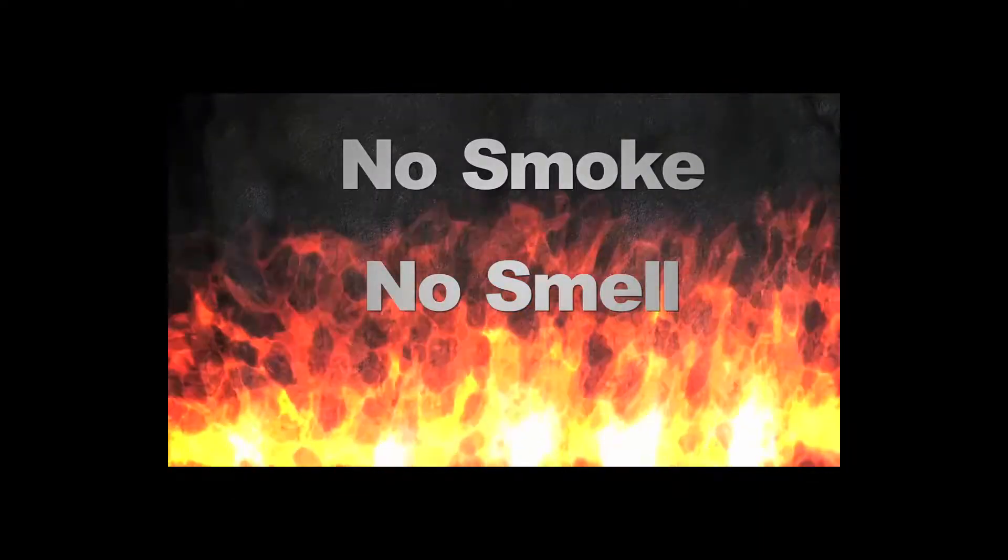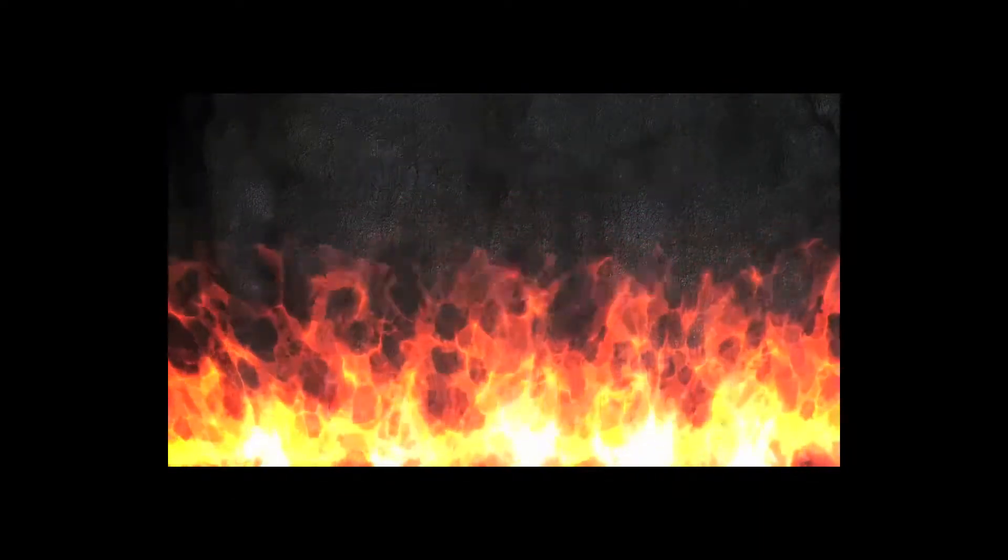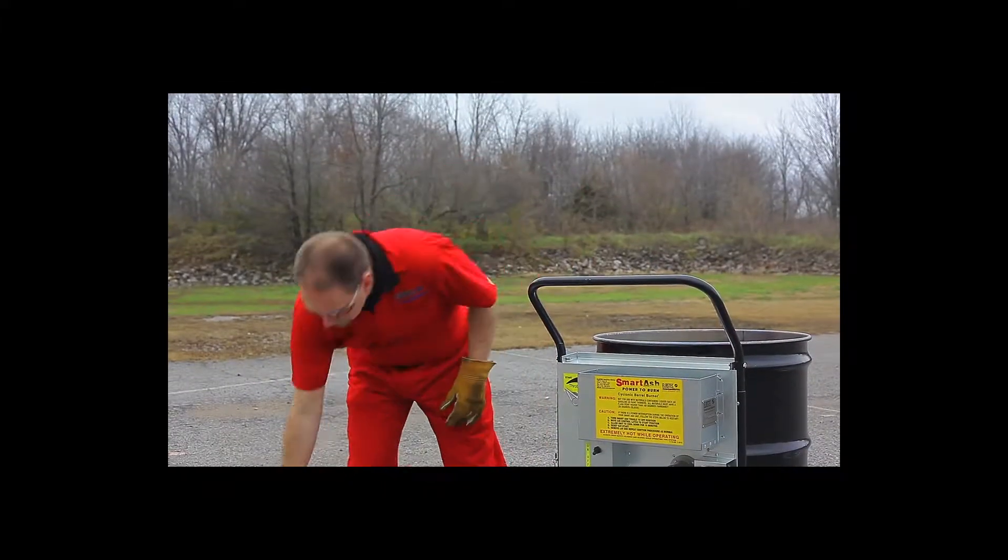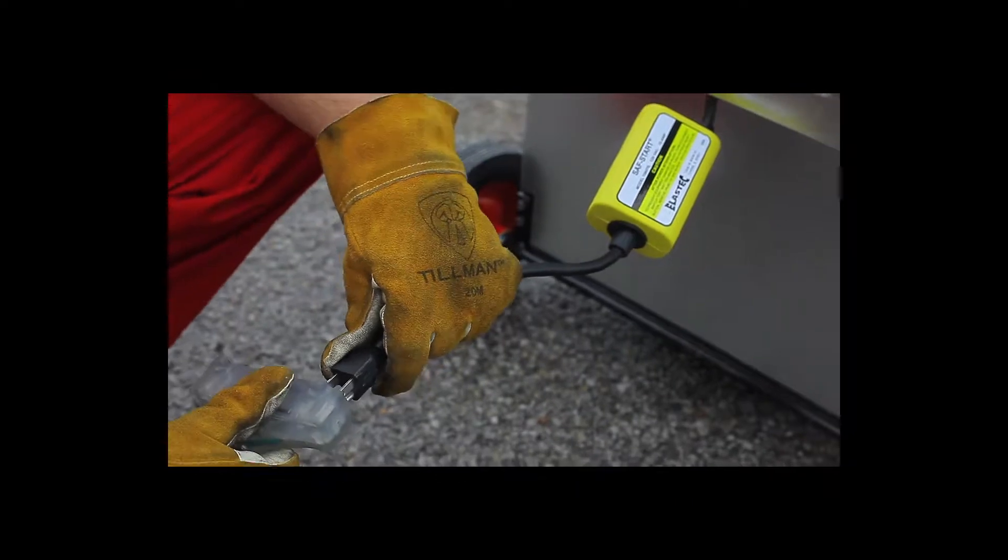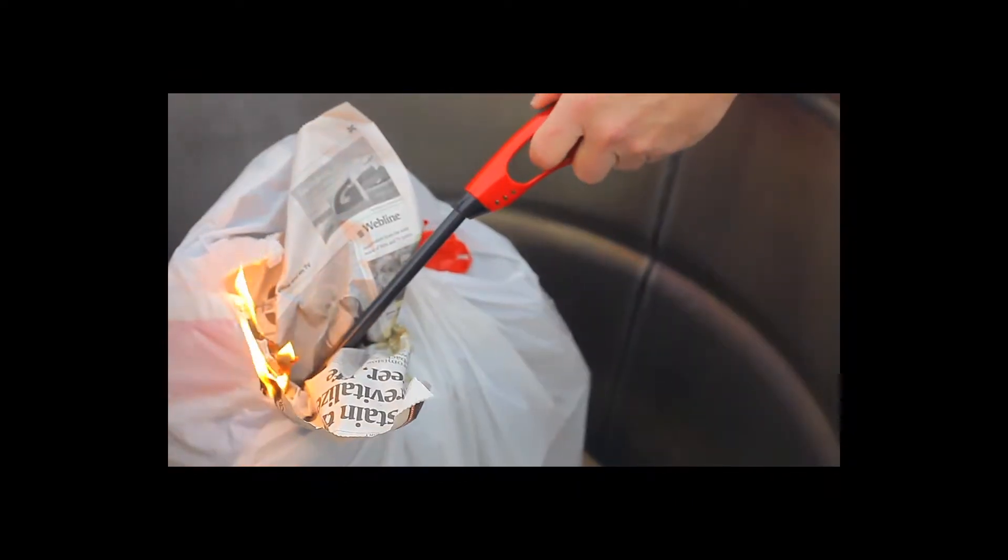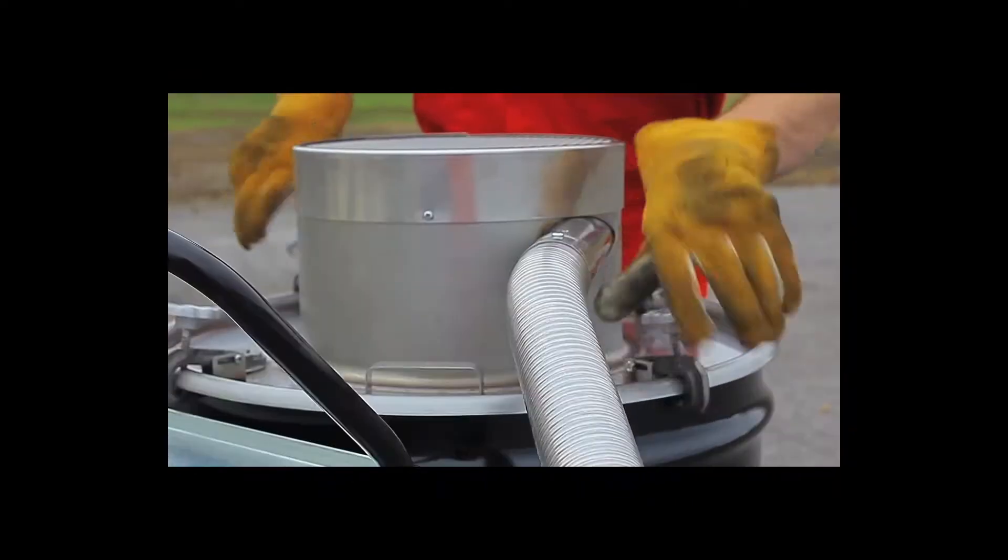No smoke, no smell, no polluting of air. Here's how it works. Load a 55-gallon open head steel drum with trash. Plug in electrical cord to 120-volt outlet. Light a match to the batch. Close and clamp the lid.